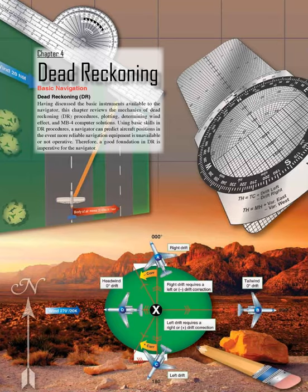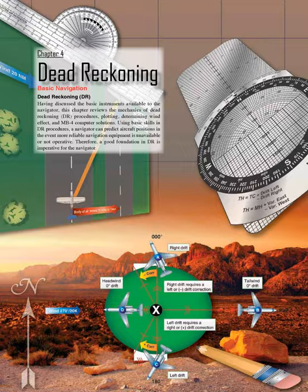Chapter 4: Dead Reckoning Basic Navigation. Having discussed the basic instruments available to the navigator, this chapter reviews the mechanics of dead reckoning (DR) procedures, plotting, determining wind effect, and MB4 computer solutions. Using basic skills in DR procedures, a navigator can predict aircraft positions in the event more reliable navigation equipment is unavailable or not operative. Therefore, a good foundation in DR is imperative for the navigator.